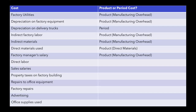Our next one: direct labor. These are the people actually on the assembly line, actually involved with the manufacturing of the product. So yes, this is a product cost and it would be considered direct labor. Direct materials and direct labor each have their own category, and then all of the indirect pieces fall under manufacturing overhead.